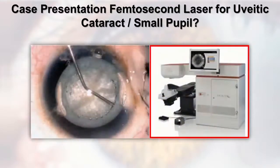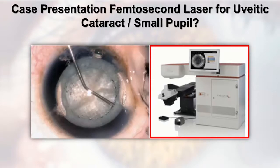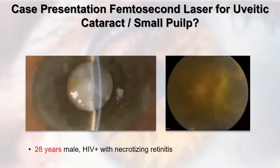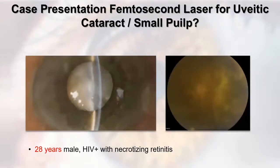I'm often asked if I use the femtosecond laser. I normally don't for routine cataracts, but there are specific situations where I may use it — for example, in patients from the uveitis service who had retinitis, require silicone oil, and have a white or intumescent cataract where the hyper-mature lens is causing shallowing of the entire chamber. Doing a capsulorhexis in a more controlled environment may be beneficial. There isn't good published data on femtosecond laser use in uveitic cataracts, but these are situations where I've applied it.